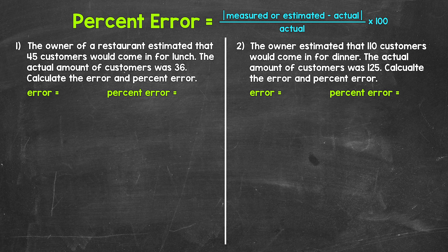Basically, percent error is a way for us to see how far off a measurement or estimation is from the actual value, written as a percent. When we take measurements or make estimations, we're not always exactly accurate. So percent error is a way for us to see how accurate a measurement or estimation is relative to, or compared to, the actual value.